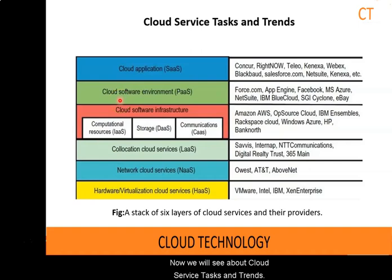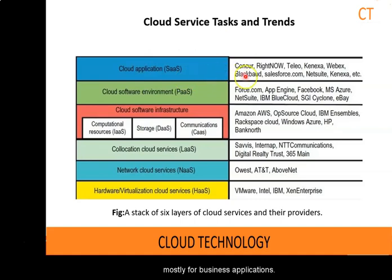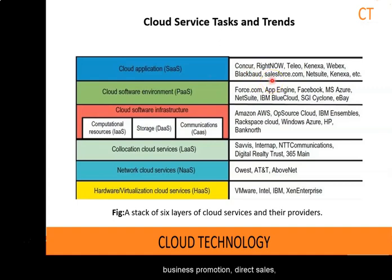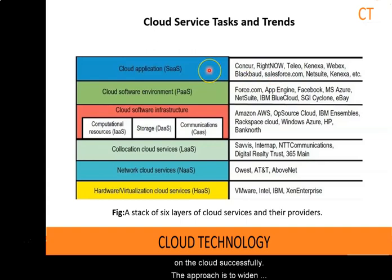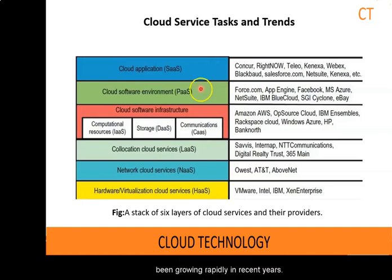Now we will see about cloud service tasks and trends. Cloud services are introduced in five layers. The top layer is for software as a service applications, further subdivided into five application areas, mostly for business applications. For example, CRM is heavily practiced in business promotion, direct sales and marketing services. CRM offered the first software as a service on cloud successfully. The approach is to widen market coverage by investigating customer behaviors and revealing opportunities by statistical analysis. Software as a service tools also apply to distributed collaboration and financial and human resource management. These cloud services have been growing rapidly in recent years.